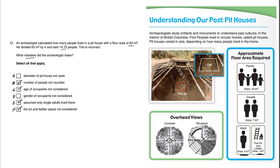Choice F: fire pit and ladder space not considered. In this calculation there is no mention of the fact that there should be space for the fire pit and ladder, so the calculation is a bit too simplistic. According to the answer key, Choice B was a must, but if a student also chooses any of C, E, and F, they receive full marks on question number 12.